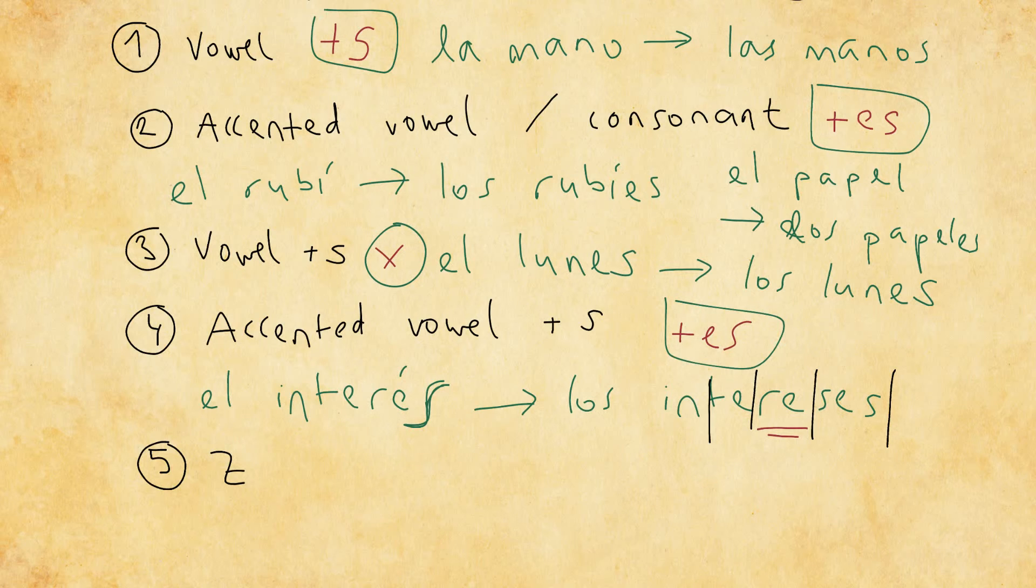However, in this case, if it didn't have this tilde right here, the natural way that we would read it, if it followed the natural rules, would be, okay, so let's divide it into syllables again, in-te-res. Again, since it ends with an s, we would stress the next to last syllable, which would be this one. And let me show you how that would sound: in-te-res. That doesn't quite sound right. And it also doesn't make much sense for the singular form of the word to have a different accent than the plural form of the word.